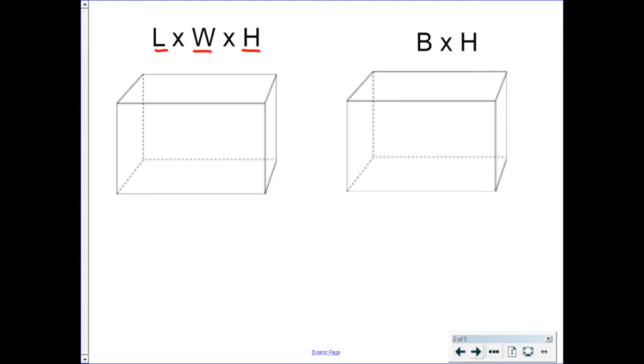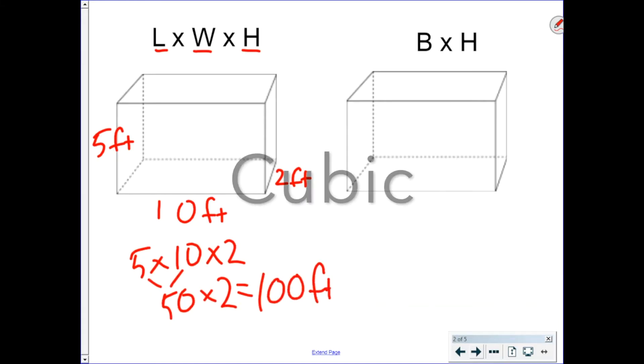Let's do another example real quick. Five feet, 10 feet, two feet. Five times 10 is 50, times two is 100, or 100 cubic feet.